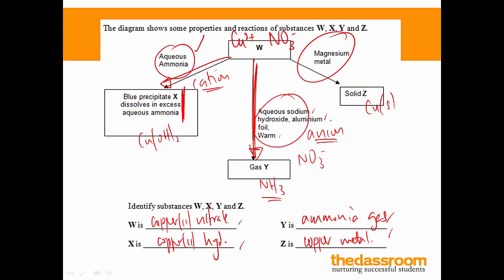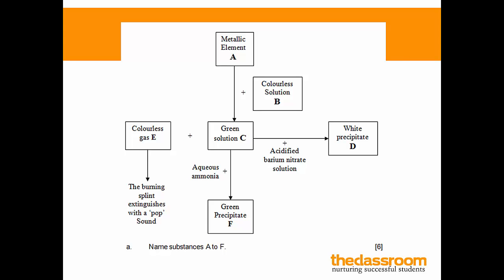So Z is just copper metal. Once again for practice, you can rewind this video and try it on your own to fill in the blanks. So if you understand, let's move on to the last and final example.